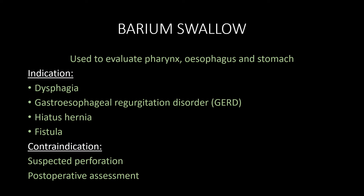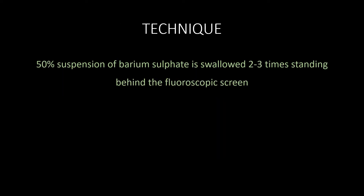Barium swallow is generally used to evaluate the upper gastrointestinal tract — the pharynx, esophagus, and stomach — to identify various abnormalities or pathologies in those regions. In this technique, a 50% suspension of barium sulphate is swallowed by the patient, who stands behind the fluoroscopic screen, and images are taken as the patient swallows the barium sulphate solution.